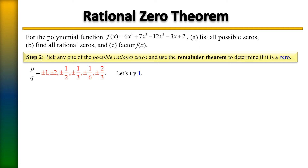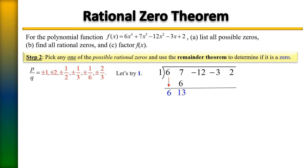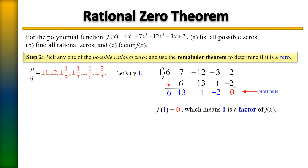We're going to try 1. Place 1 on the outside as the divisor and put the coefficients underneath. Bring down the 6, multiply by 1 to get 6, bring down 13. Multiply by 1 to get 13, bring down 1. Multiply by 1 to get 1, bring down negative 2. Multiply by 1 to get negative 2. Bring down 0 — the remainder is 0. This proves that 1 is a zero of our polynomial.